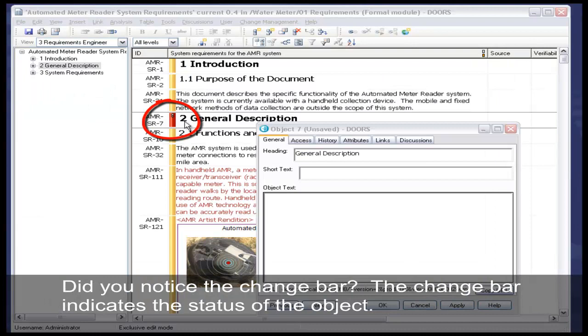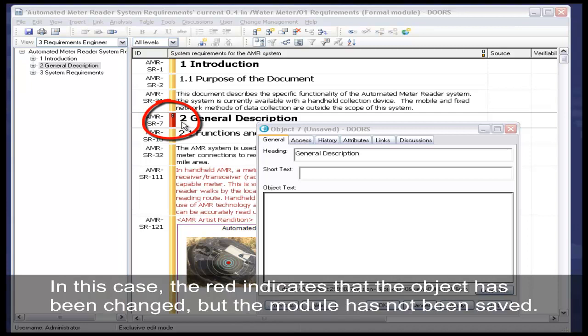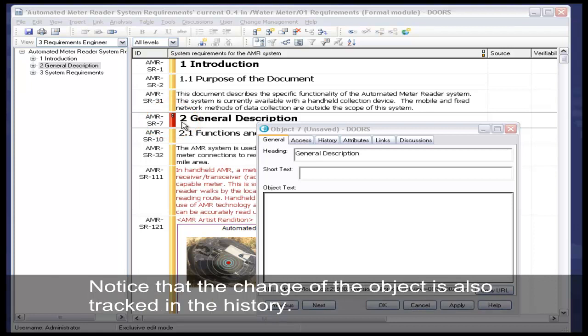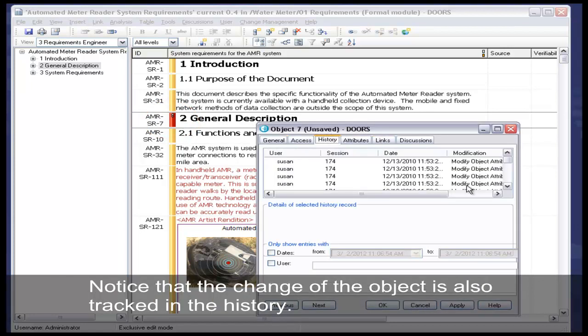Did you notice the change bar? The change bar indicates the status of the object. In this case, the red indicates that the object has been changed, but the module has not been saved. Notice that the change of the object is also tracked in the history.